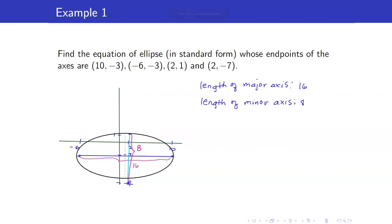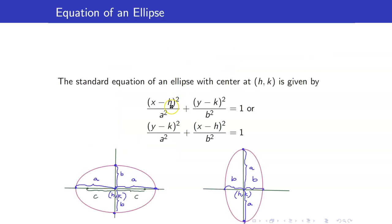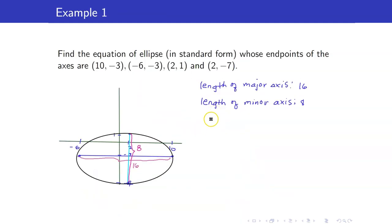Let me draw the ellipse obtained. To get the equation, we need the center (h, k) and the values of a and b. The center is just the intersection of the major and minor axes, which is the point (2, −3). Our a is half the length of the major axis, so a = 16/2 = 8. And b is the distance from the center to one endpoint of the minor axis: 1 minus (−3) = 4.